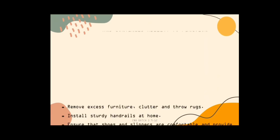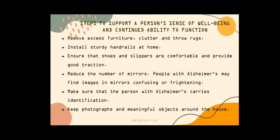Remove excess furniture, clutter, and throw rugs. Install sturdy handrails at home. Ensure that shoes and slippers are comfortable and provide good traction. Reduce the number of mirrors, as people with Alzheimer's may find images in mirrors confusing and frightening. Make sure that the person with Alzheimer's carries identification, and keep photographs and meaningful objects around the home.